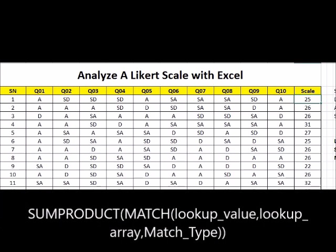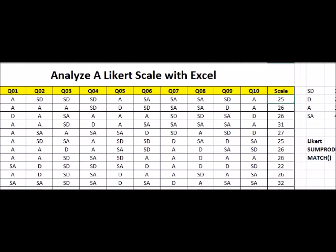Let's quickly verify that. We're saying 3 plus 1 is 4, plus 1 is 5, plus 1 is 6, plus 3 is 9, plus 4 is 13, plus 4 is 17, plus 4 is 21, plus 1 is 22, and plus 3 is 25. So that's very, very correct.